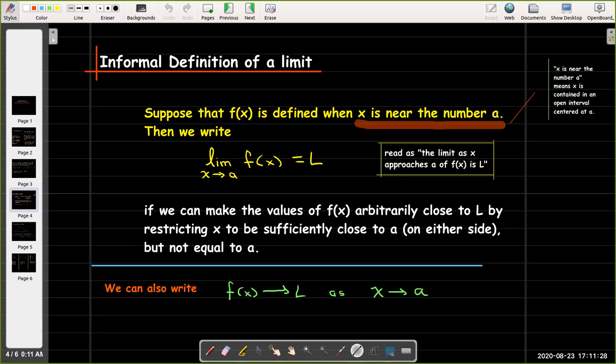Also, we really don't care what happens when x equals a. What matters is what happens when x is close to a. Another way that we could write this, instead of writing the limit notation with the lim, is we could use this arrow notation. So here we would say that f approaches L as x approaches a.